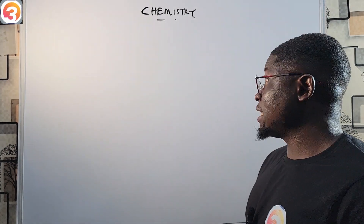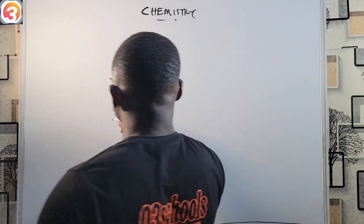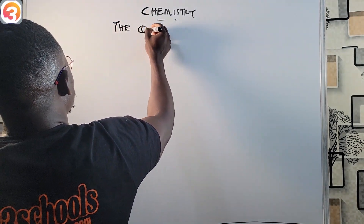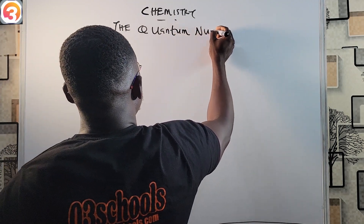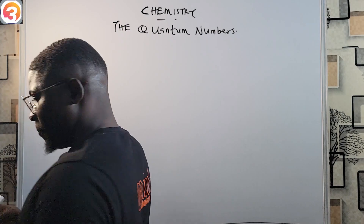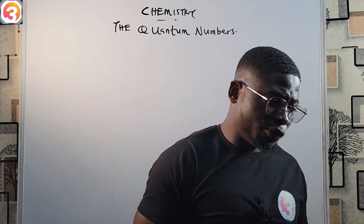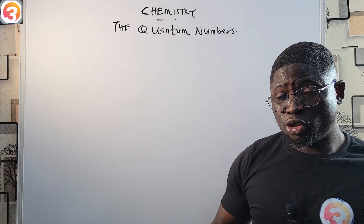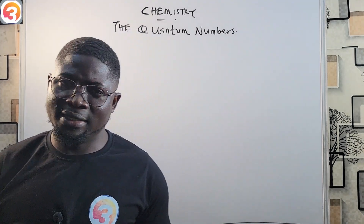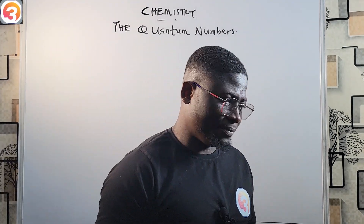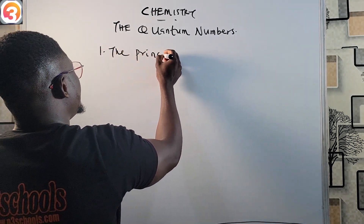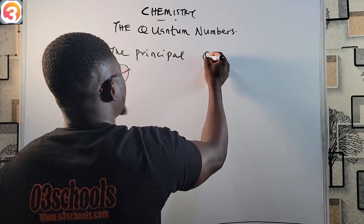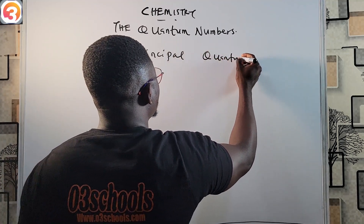Hello guys and welcome to JAMB chemistry class. In this class I'm going to be looking at the quantum numbers. There are four quantum numbers that Niels Bohr used to explain the results of his experiments. The first one is the principal quantum number.